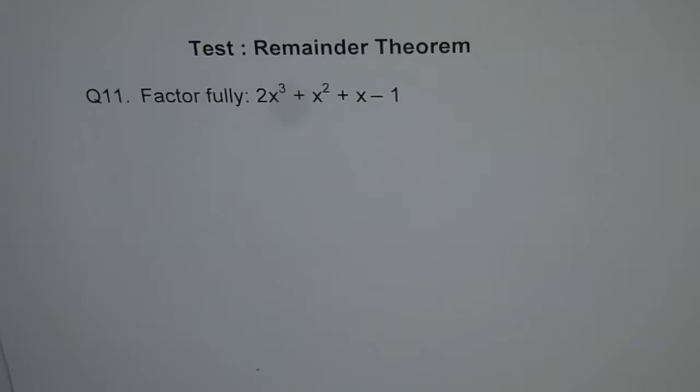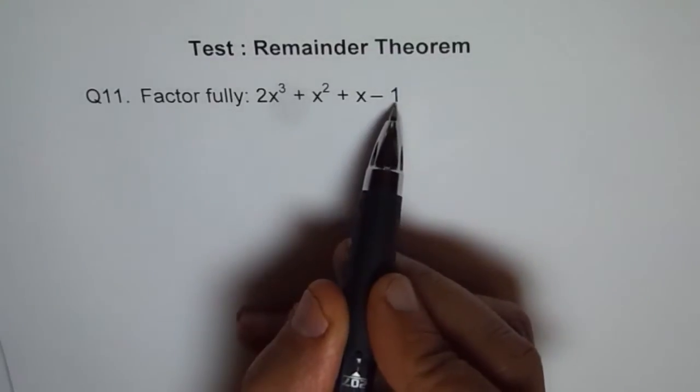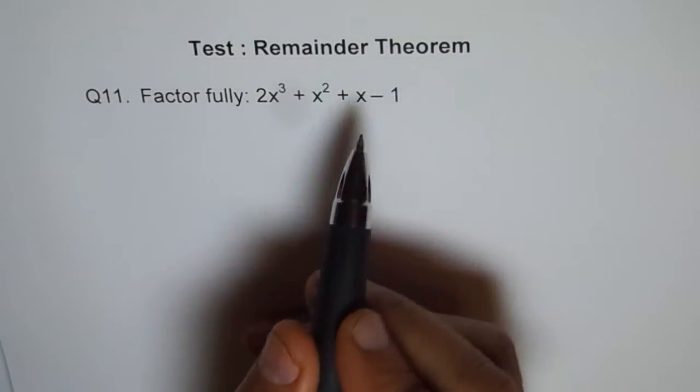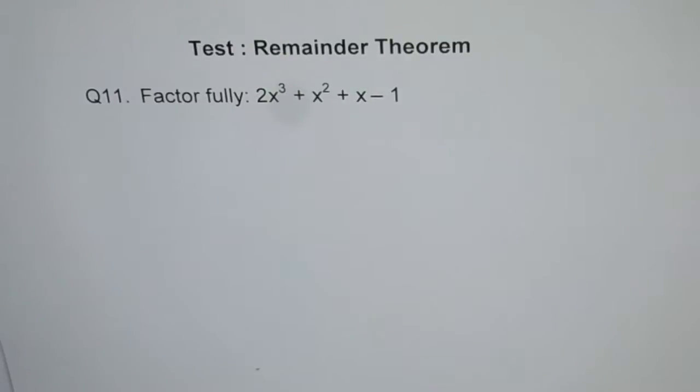When you start such a problem, first thing is you should figure out what are the possible factors. There should be factors of the constant term and factors of combination of constant term and the leading coefficient.